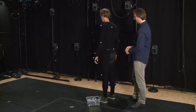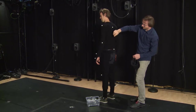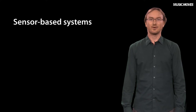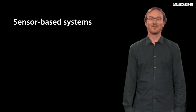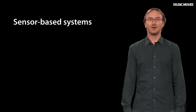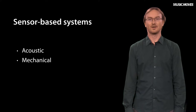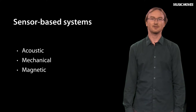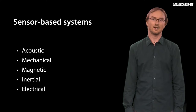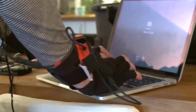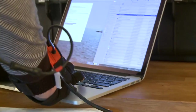But first, let us talk a little bit about sensor-based motion capture. Sensor-based systems are built around sensors. There are a number of different types of technologies, such as acoustic sensors, mechanical sensors, magnetic sensors, inertial sensors, and electrical sensors. Common to all of these is that they are required to be put on the body of the people to be studied, which makes them less attractive for many musical applications.